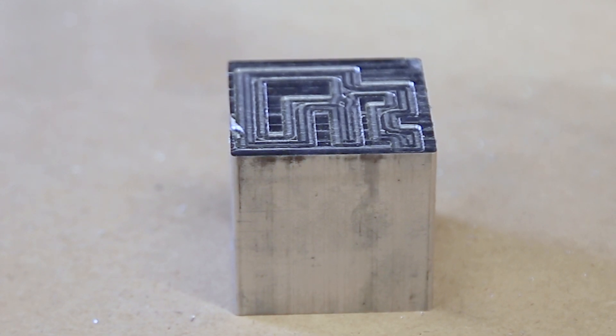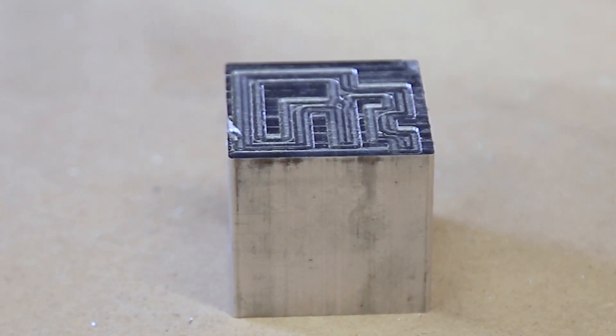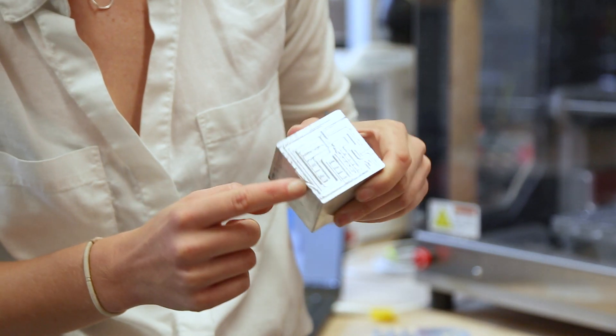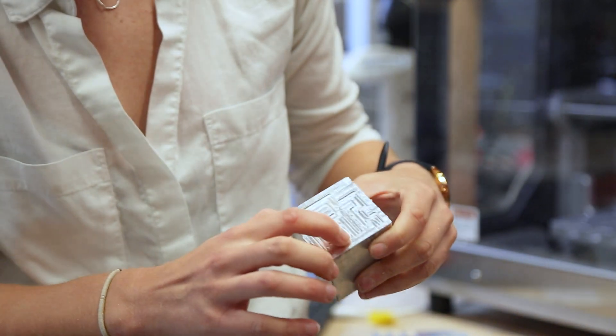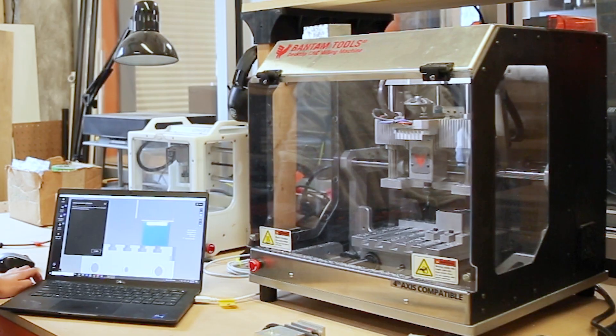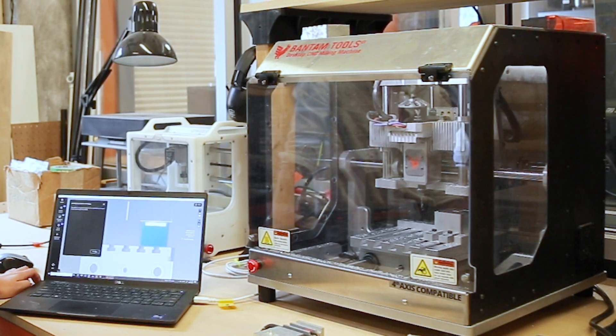The clamps came loose and we had a little bit of a runoff to the side where we had to shut the machine down and restart, reclamp it down and try again. But there's the beginning of our maze, so that's our overview of the Bantam tools desktop mill.